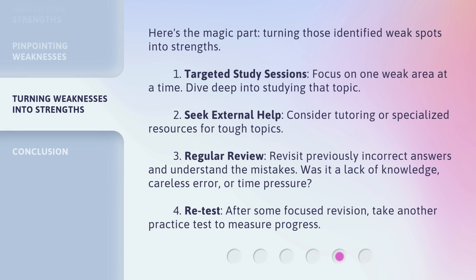Here's the magic part — turning those identified weak spots into strengths. First, targeted study sessions: focus on one weak area at a time and dive deep into studying that topic. Second, seek external help: consider tutoring or specialized resources for tough topics. Third, regular review: revisit previously incorrect answers and understand the mistakes — was it a lack of knowledge, a careless error, or time pressure? Fourth, retest: after some focused revision, take another practice test to measure progress.